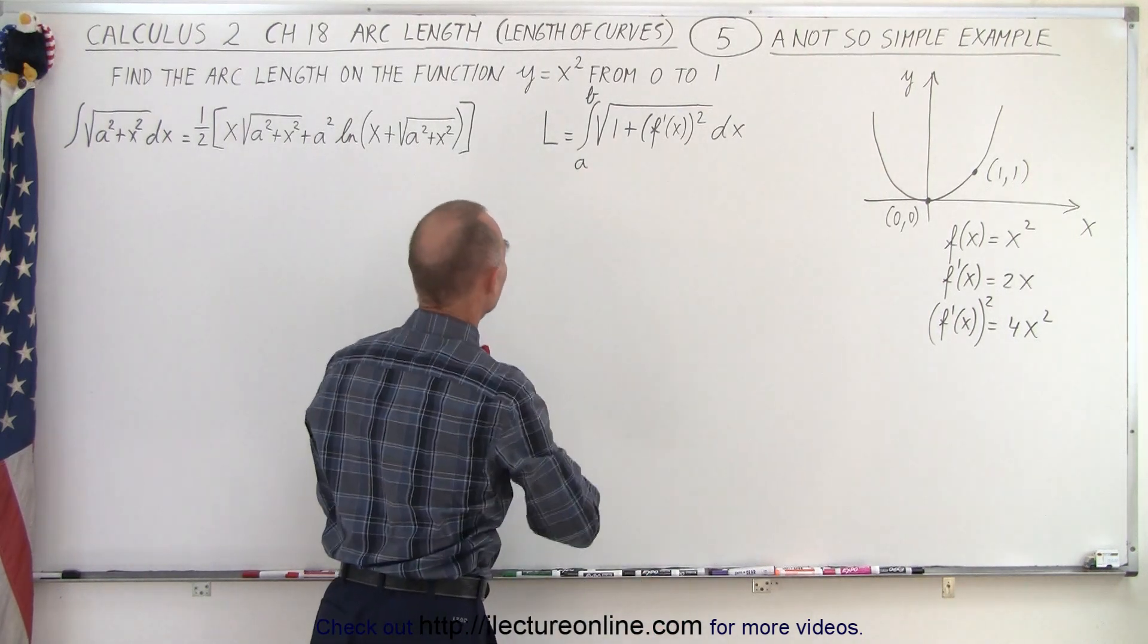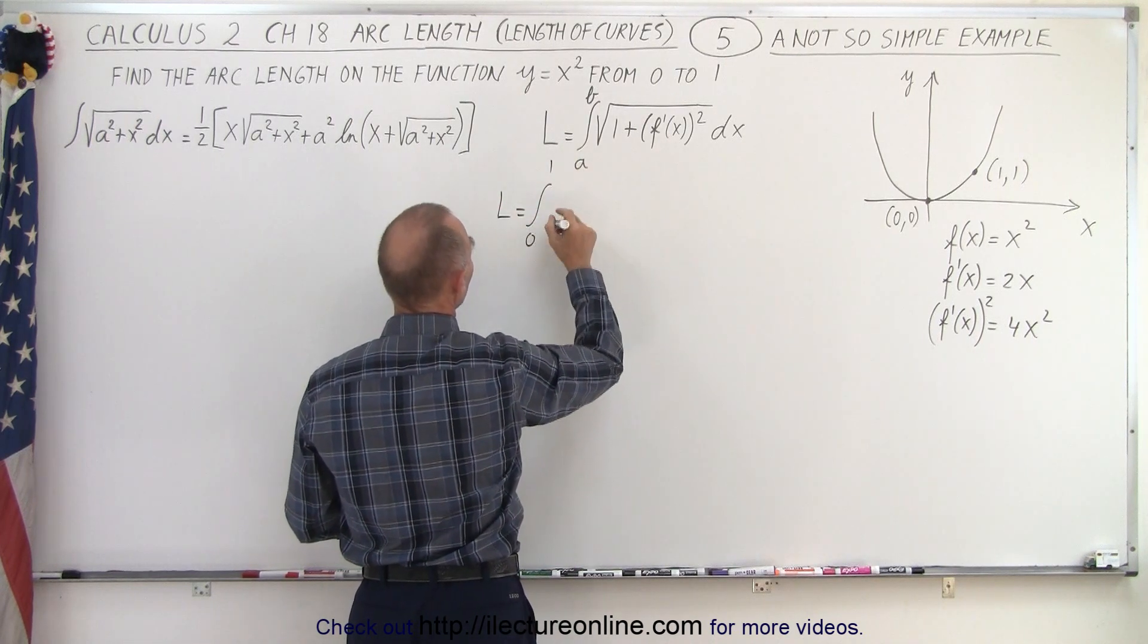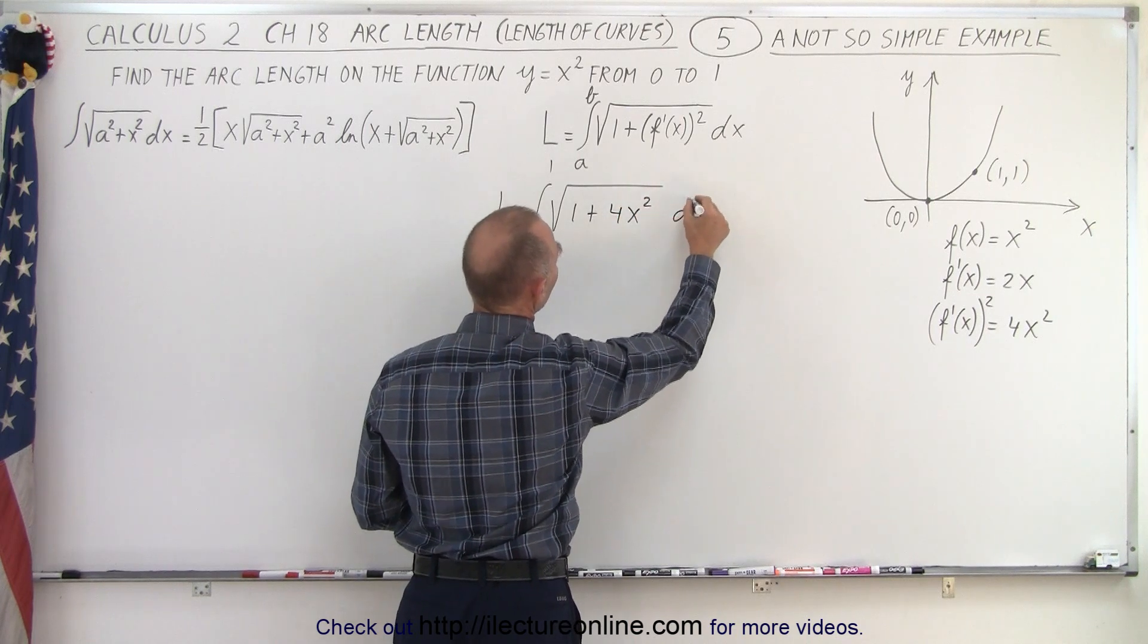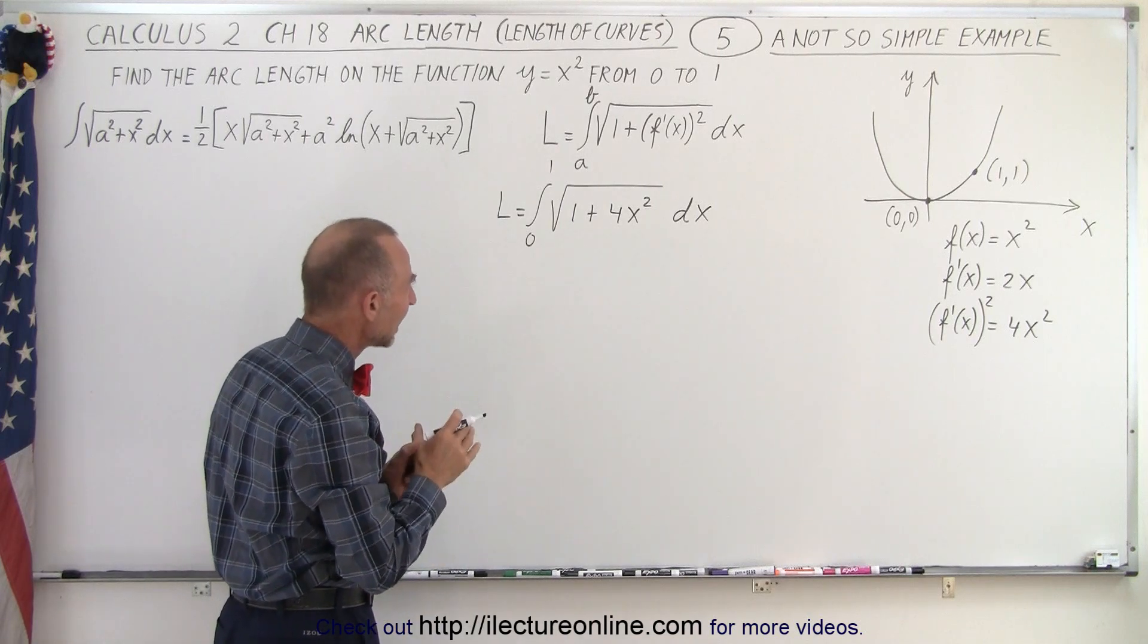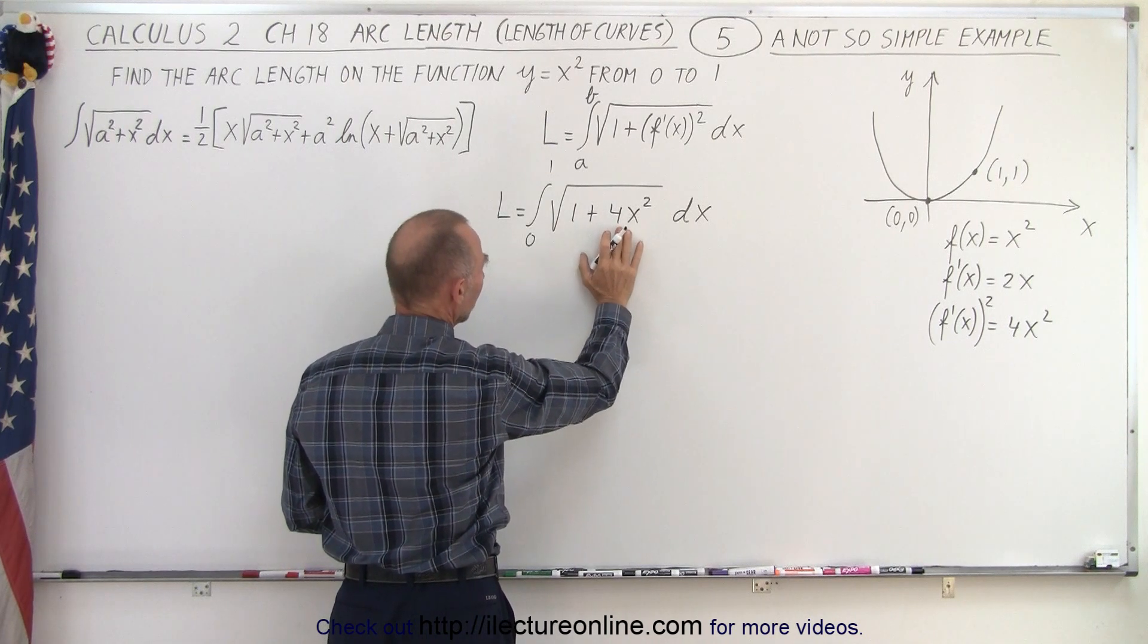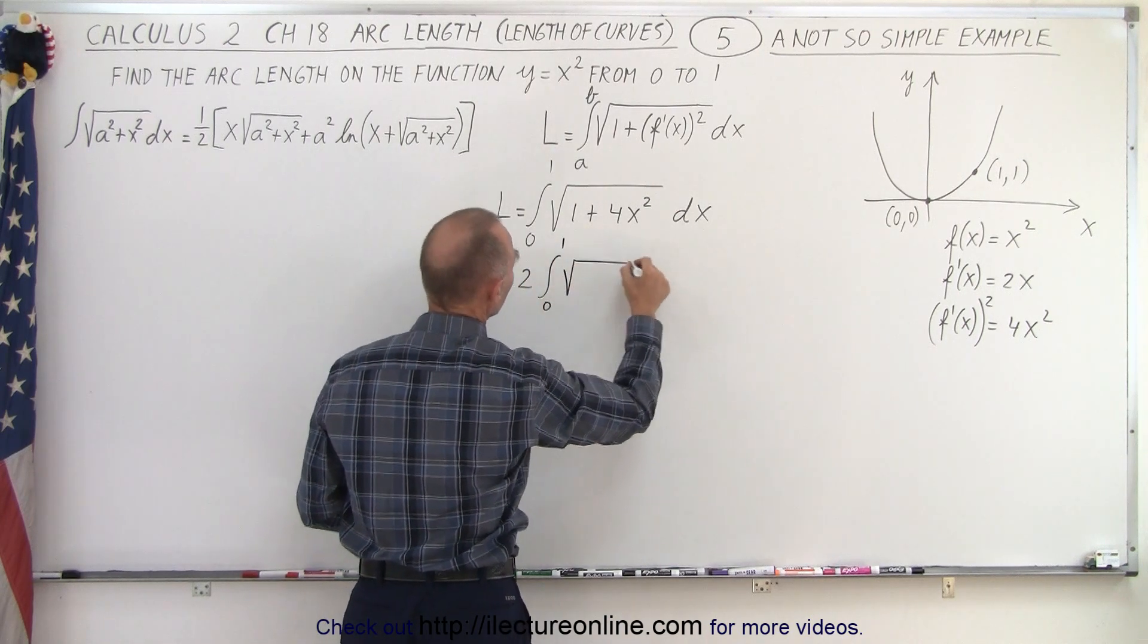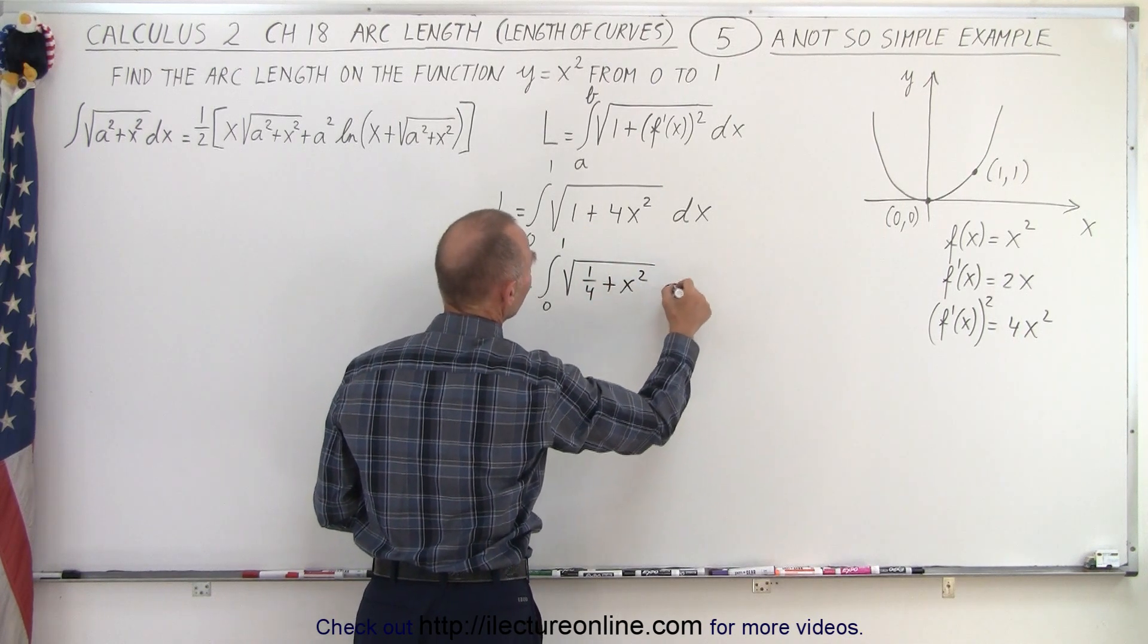So we're going to plug that in here. So now we have the arc length L is equal to the integral from 0 to 1, these are x limits, times the square root of 1 plus the derivative squared, which is 4x squared times dx. And here we're going to need to use the same technique again. We're going to factor something out. We're going to factor out a 4. Of course, when you factor out a 4 out of the square root, out comes a 2. So we can write L is equal to 2 times the integral from 0 to 1 of the square root, now here I'm going to need 1/4 plus x squared times dx.